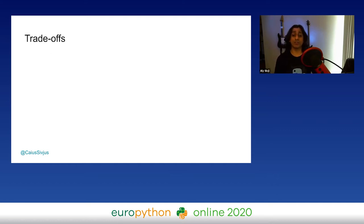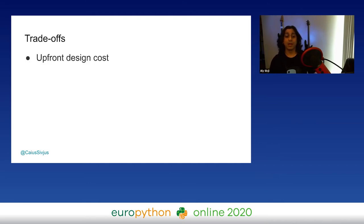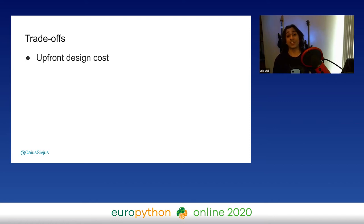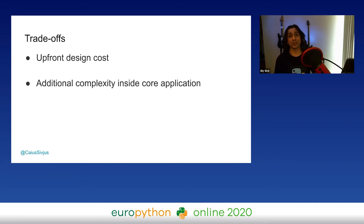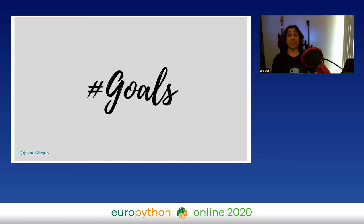We also have to discuss trade-offs for plugins — I don't like to think of these as disadvantages, more along the lines of things we need to consider before making our decision. Like everything in object-oriented programming, we have to do upfront design to implement plugin architecture and figure out how the plugin is going to interact with our core application logic. Plugins also add complexity to core application logic, and we'd have to decide if that additional complexity is worth it.